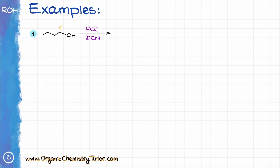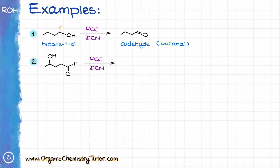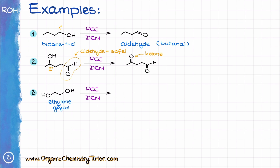Let's look at a few examples. In the first example, I have the simple primary alcohol, butane-1-ol. Since the oxidation will stop at the formation of an aldehyde, I will end up forming the corresponding aldehyde, butanal. In the second example, I have a secondary alcohol and an aldehyde. Unlike the Jones oxidation, the reaction with PCC will not do anything to our aldehyde — it is safe. The secondary alcohol, however, will turn into the corresponding ketone. In the next example, I have ethylene glycol, which has two primary alcohols. The reaction with PCC will convert both of those alcohol groups into corresponding aldehydes, giving us a di-aldehyde called glyoxal.